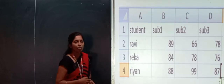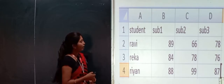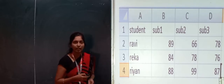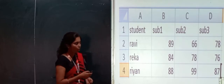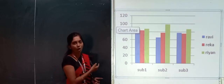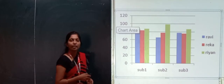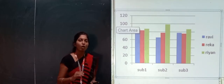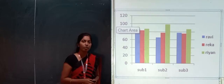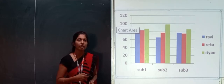Suppose I have some data in MS Excel — student names Ravi, Rekha, and Rehan, along with marks for Subject 1, Subject 2, and Subject 3. If I click on the chart option in the Insert ribbon, I get a chart — which is the diagrammatical representation of my spreadsheet data.